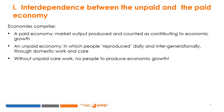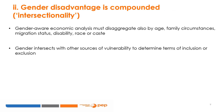Unpaid care work is not counted as contributing to economic growth, but it makes an indirect contribution since without this work there would be no people to produce economic growth. The gender-aware economic analyst must disaggregate variables not only by sex, but also by age and stage in the life cycle, family circumstances, migration status, disability, race, or caste — taking into account how gender intersects with other sources of vulnerability to determine terms of inclusion in or exclusion from economic opportunities.